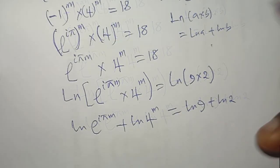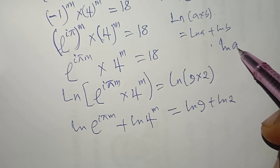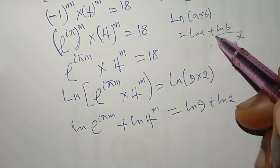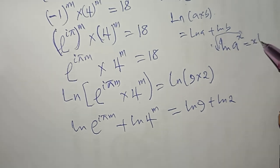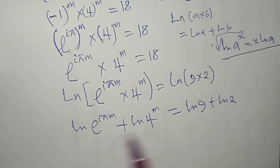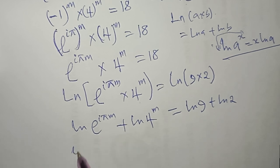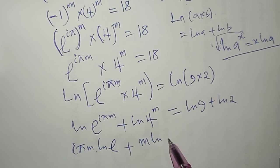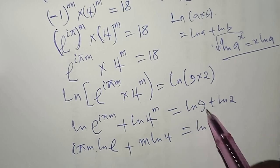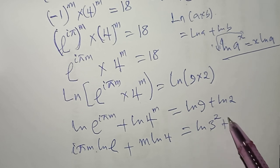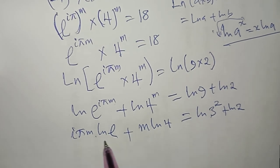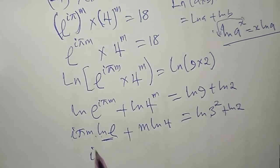Using the power rule — log(a^x) = x·log(a) — I bring the exponents down. The left side becomes iπm·ln(e) plus m·ln(4). Since ln(e) = 1, this simplifies to iπm plus m·ln(4). On the right side, 9 = 3², so ln(9) = 2·ln(3), giving 2·ln(3) plus ln(2).